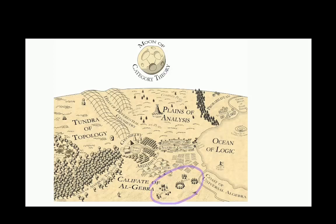This time we're going to take a look at group theory from the perspective of category theory. I really like this picture here - this sort of map of mathematics that I found on the Internet. We have these different regions, which are like different areas of mathematics, depicted as different kinds of landscapes that are somehow related to each other.